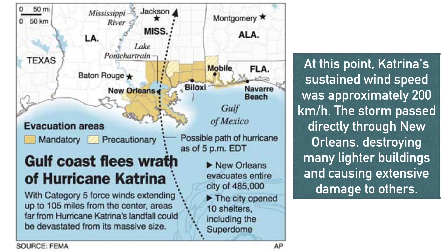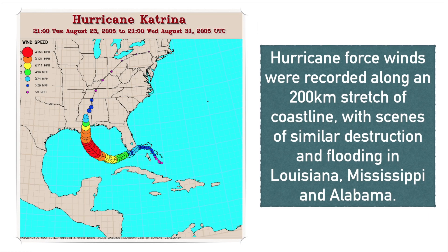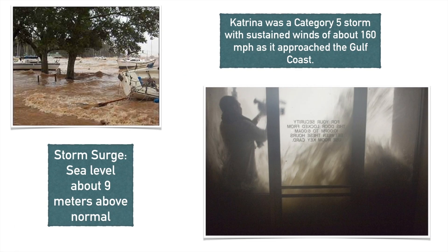It destroyed many buildings and caused extensive damage to others. Hurricane force winds were recorded along a 200 kilometer stretch of coastline. Hurricane Katrina, as a category 5 storm, had a storm surge of about 9 meters in height.